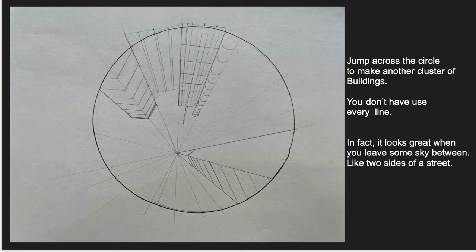After a while, you've made a few buildings. I recommend you jump across the circle and start making a cluster of buildings on the other side. You don't have to use every line. You'll see that I'm going to end up not using some of the lines in between. This makes it look like you're looking at two different sides of the street, giving you air and space between.